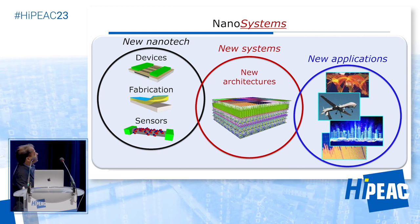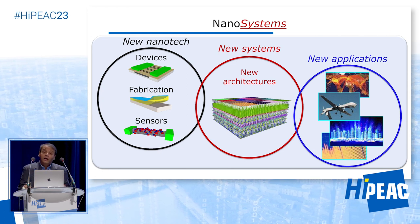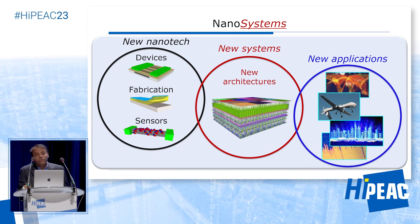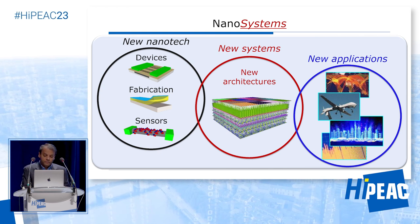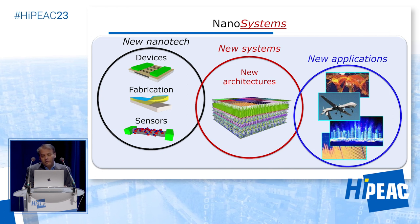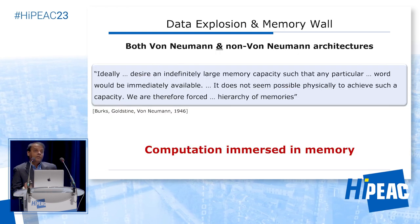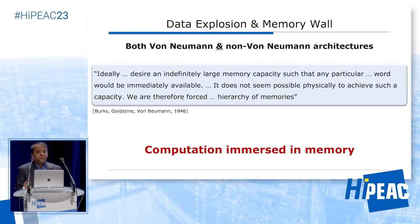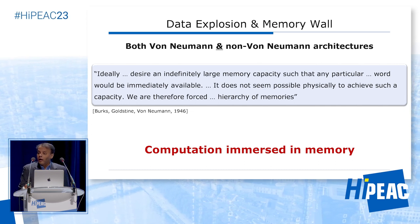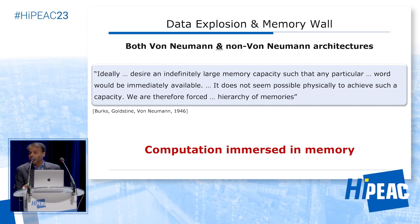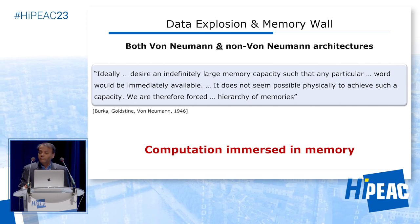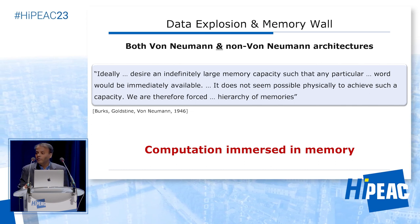These new architectures enable new applications — the abundant data applications, for example AI, AR, VR, and so on. Now, I want to spend a little time talking about von Neumann and non-von Neumann, because there is a lot of confusion. Even looking at the HIPEAC program, I actually saw that confusion, because everybody just goes and blames von Neumann for all the trouble that we are having.